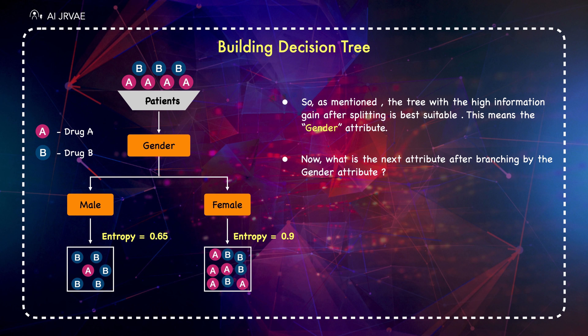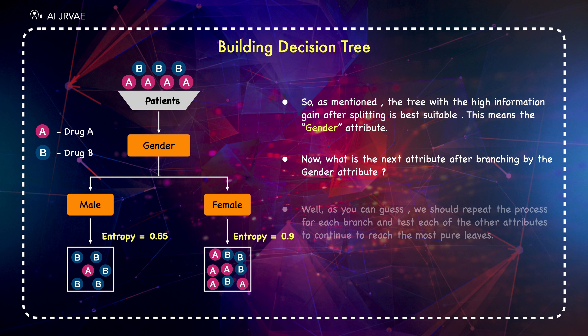Now, what is the next attribute after branching by the gender attribute? As you can guess, we should repeat the process for each branch and test each of the other attributes to continue reaching the most pure layers. This is the way you build a decision tree. Thanks for watching.